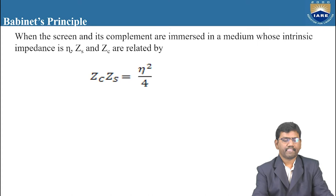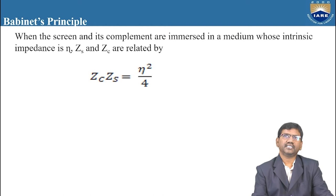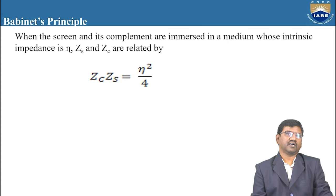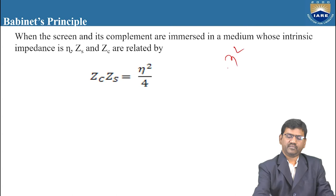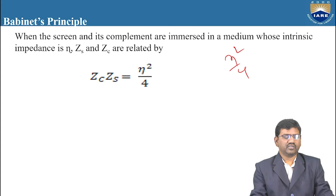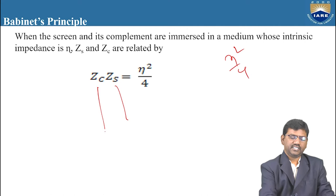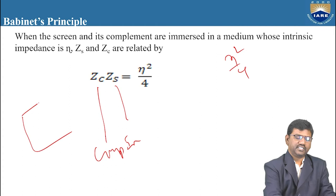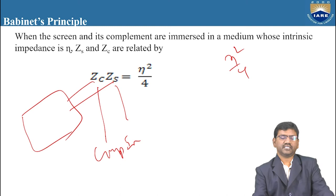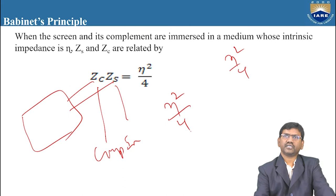According to Babinet's Principle, when the screen and its complement are immersed in a medium whose intrinsic impedance is η, then Zs and Zc are related by Zc × Zs = η²/4. That means the source impedance multiplied by the complementary impedance of the sheet equals the intrinsic impedance squared divided by 4, i.e., η²/4. This is one standard expression for the slot antenna using Babinet's Principle.